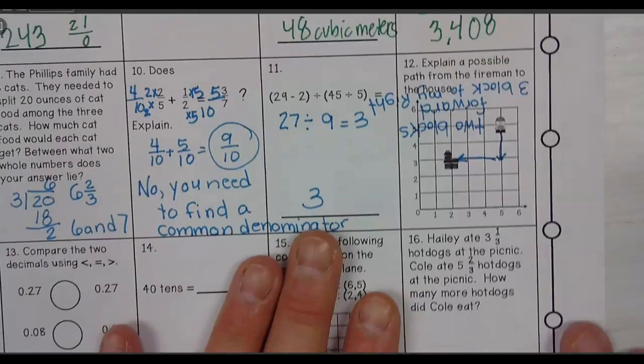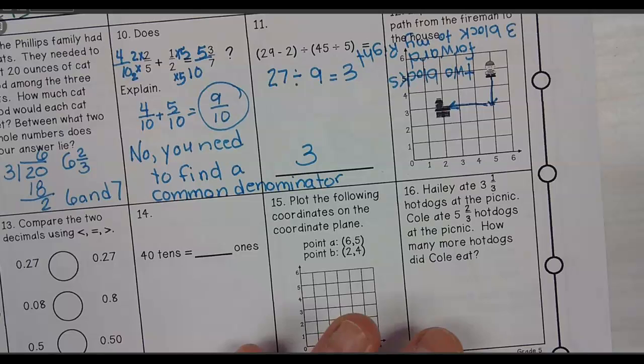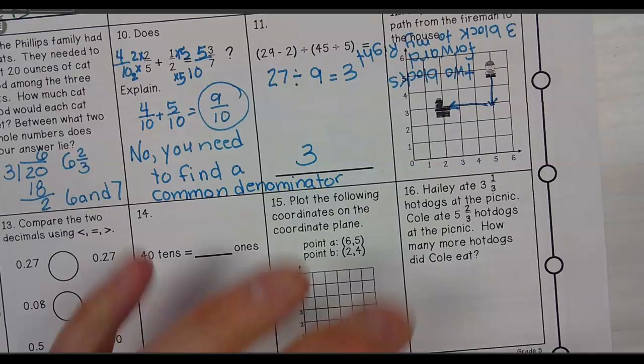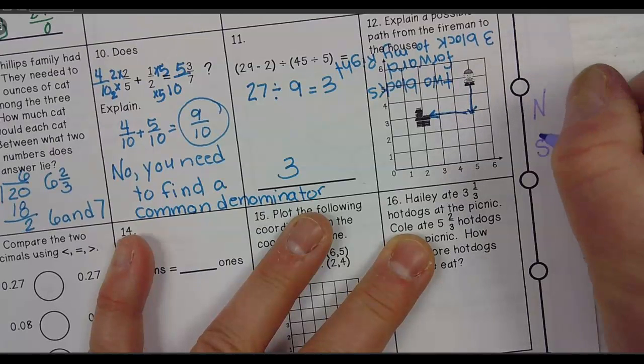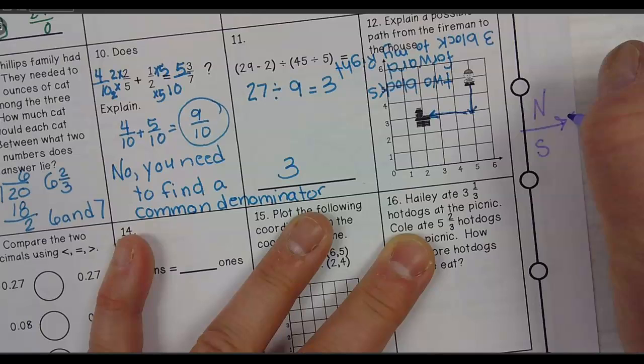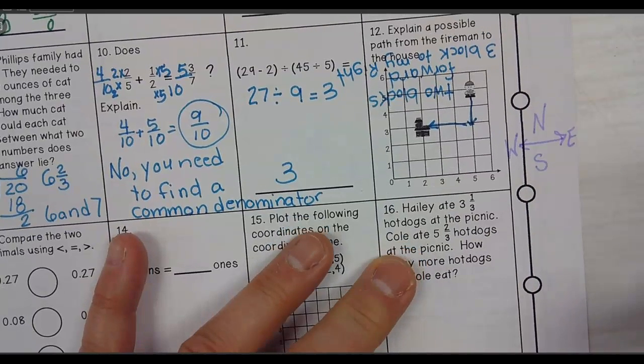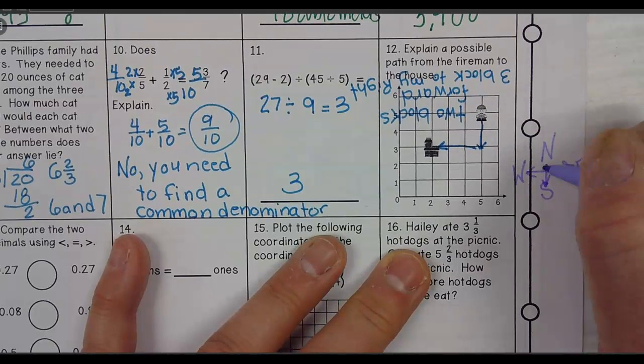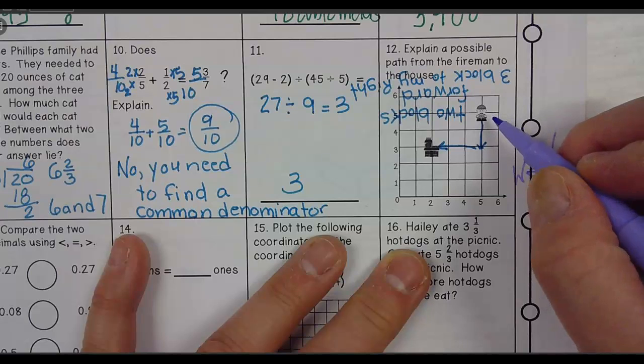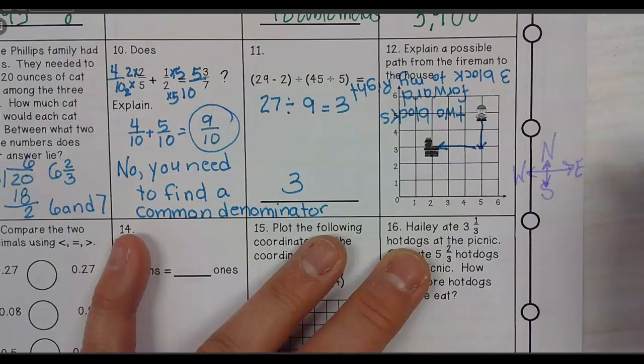Now, the other way I could have done it is I could have put a compass rose there. If I put a compass rose there, I have north, south, east, and west, right? So if I put a compass rose there, I could say the fireman needed to go two blocks south and three blocks west. Does that make sense?